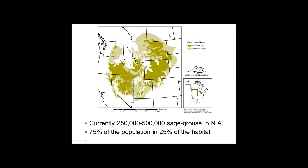This is a map of current and historic sage-grouse range, very similar to the sagebrush sea map. Current range is shown in dark brown and historical range along the periphery in lighter brown. There are currently 250,000 to 500,000 sage-grouse left in North America, with 75 percent of the population in about 25 percent of the habitat. Some range fingers extend up into Canada in southeast Alberta and southwest Saskatchewan, and a lot of the decline is happening along the periphery.